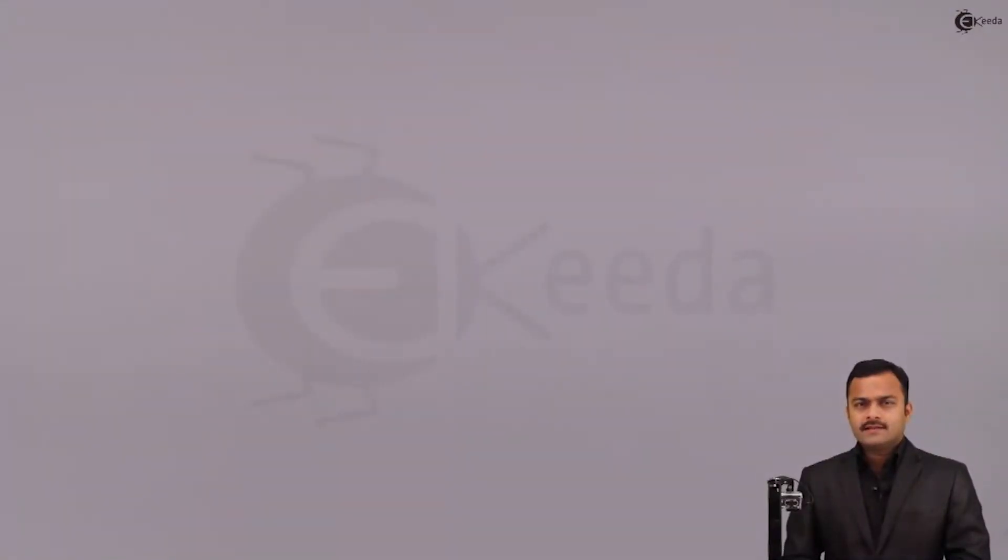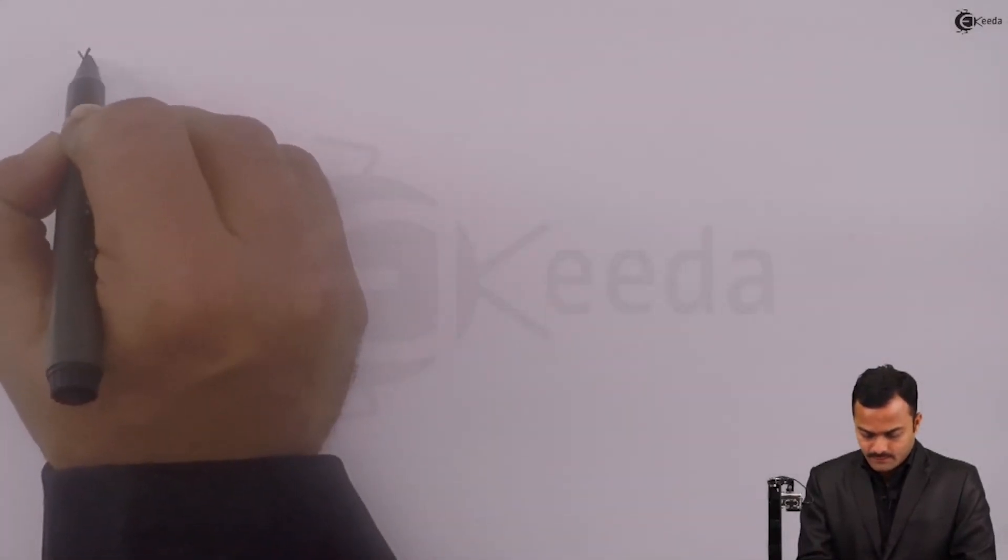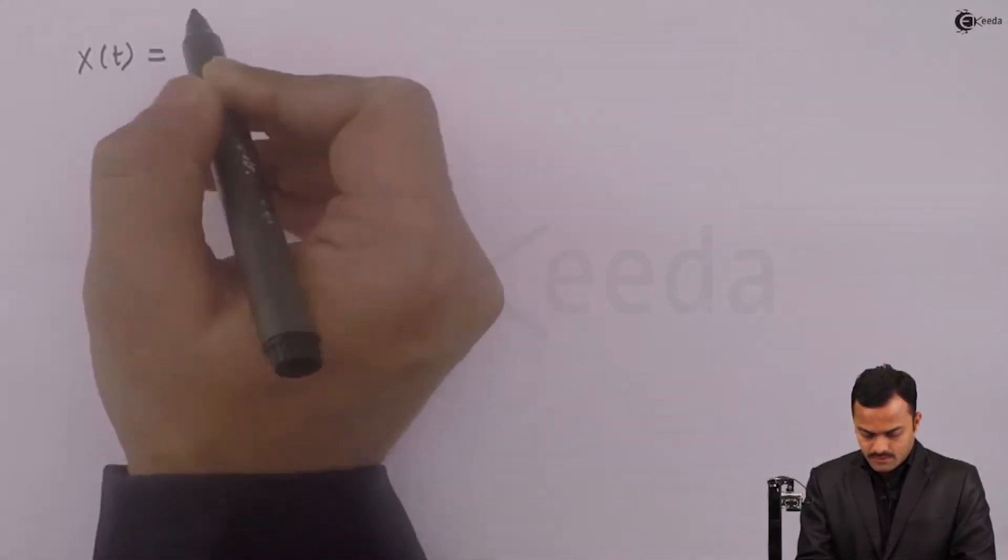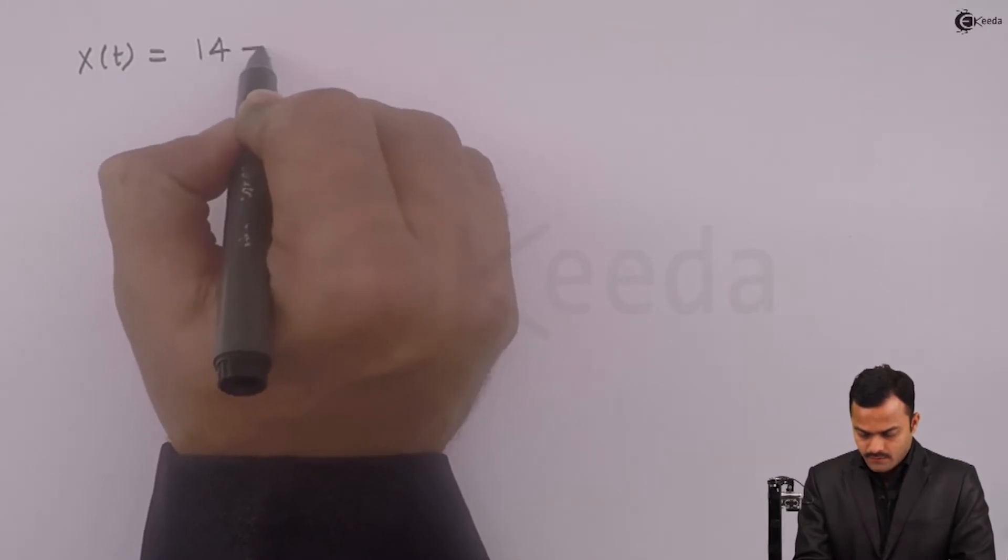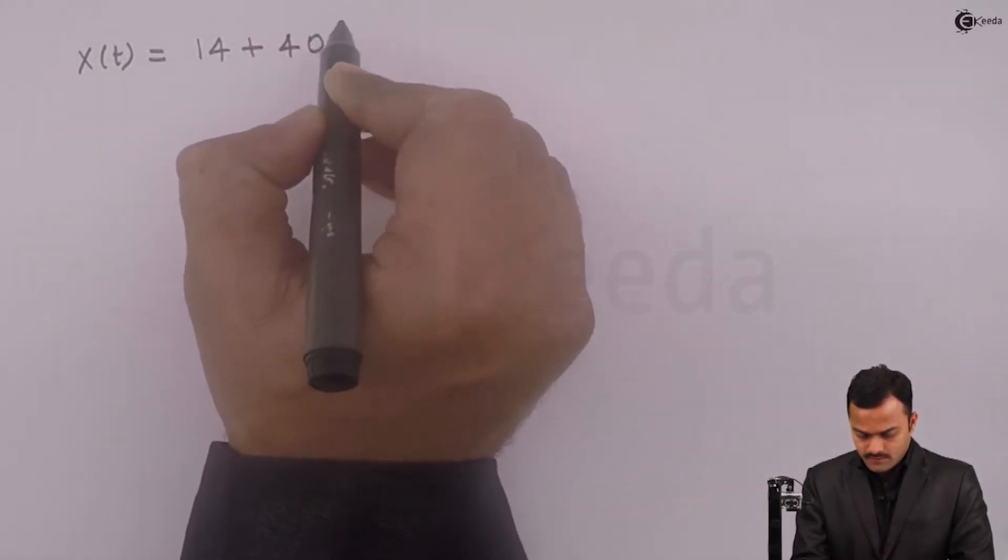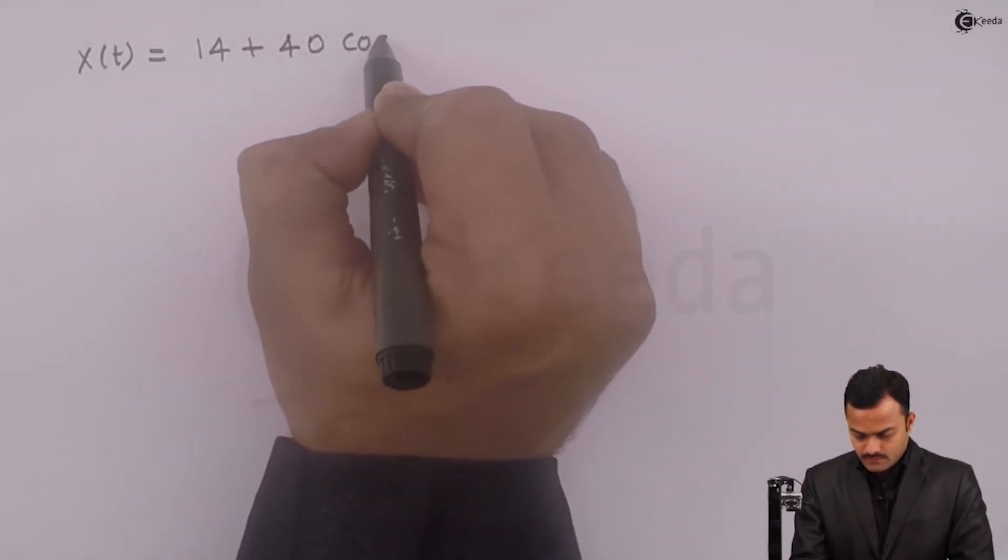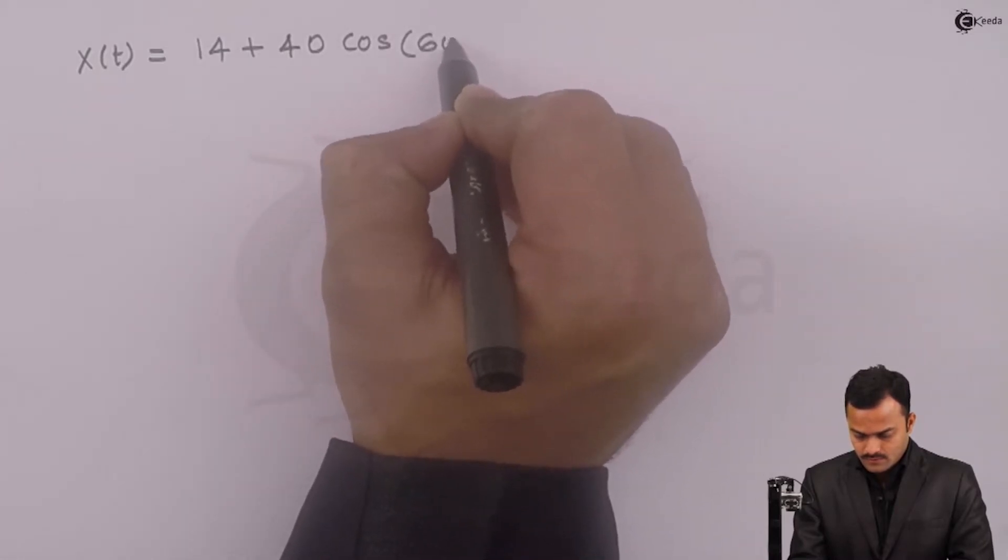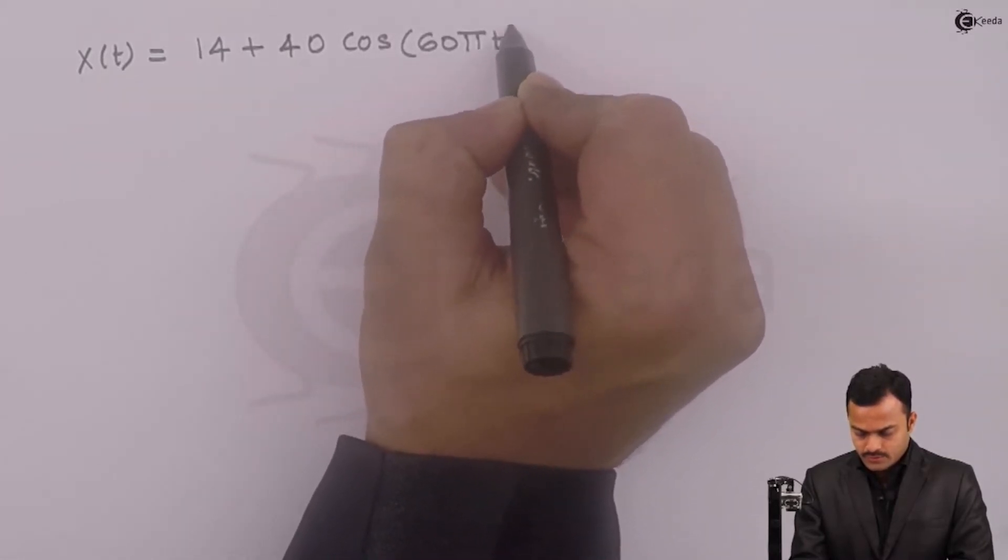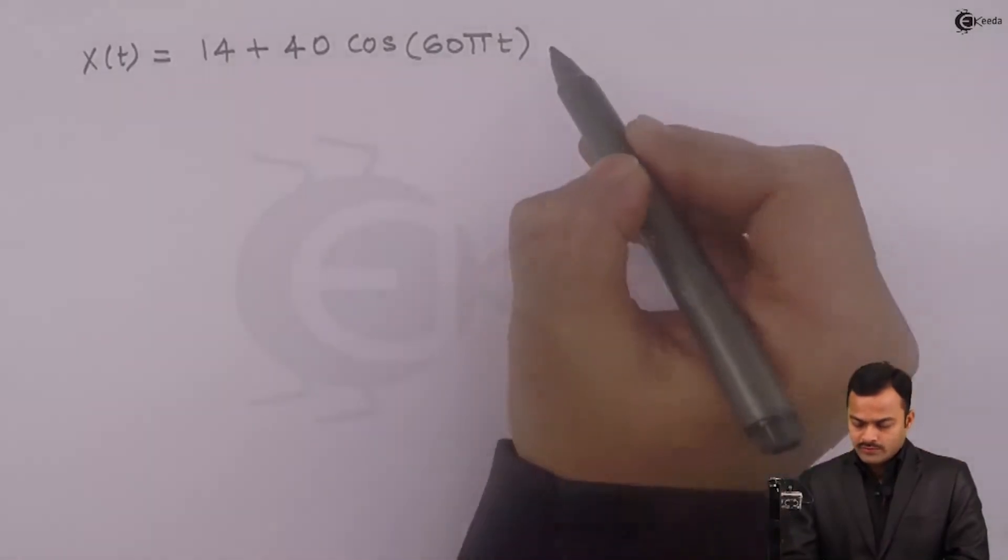Hello students, in this video we are going to see a continuous time signal and we'll check whether the given signal is periodic or not. The signal x(t) is given as 14 plus 40 cos(65t) and what you have to find out.